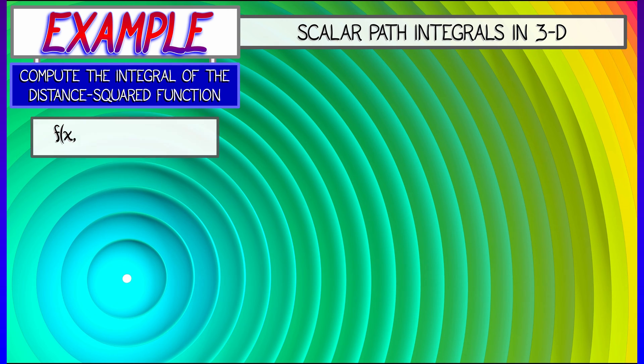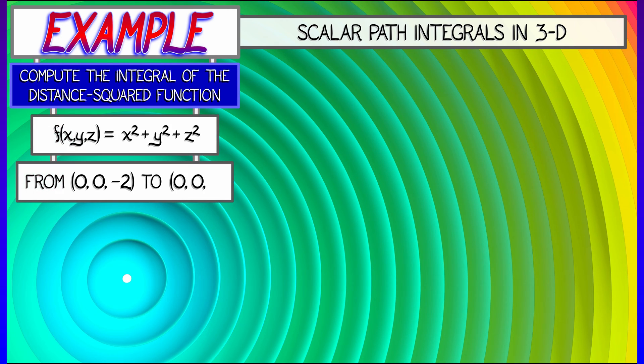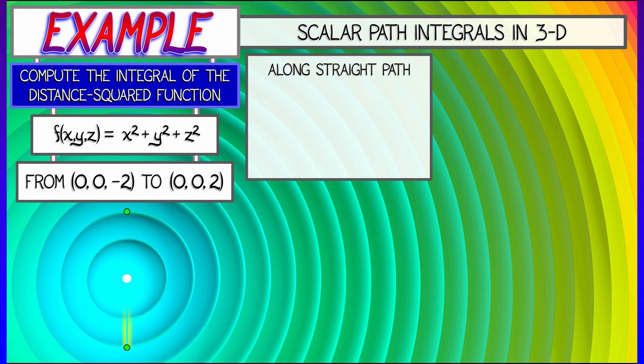Let's say we have the function f given by x squared plus y squared plus z squared, and we want to integrate this function along a path from the point (0,0,-2) to (0,0,2). Let's see how the path matters. First, let's keep it simple. Do a straight line path that can be parametrized as gamma of t equals (0,0,t) for the z coordinate as t goes from -2 to 2.